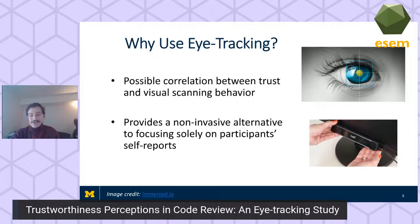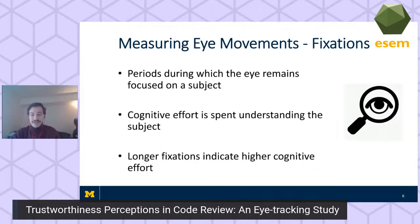We use eye tracking to study this because previous work suggests trust impacts various eye tracking metrics, particularly the intensity and distribution of visual attention. Eye tracking is non-invasive and provides a large amount of objective data, giving us higher confidence than self-reports alone. One of the two major features we focus on is fixations — periods during which the eye remains focused on a subject, such as a particular word in a line of code. Longer fixations generally indicate higher cognitive effort.